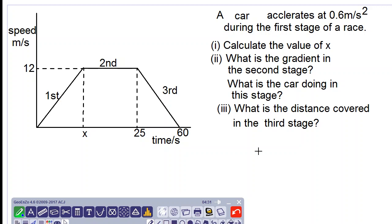Good day everyone, we are working with a speed-time graph and we have a car that accelerates at 0.6 meters per second squared during the first stage of a race. Calculate the value of x, that's part one. So let's find out what acceleration is.